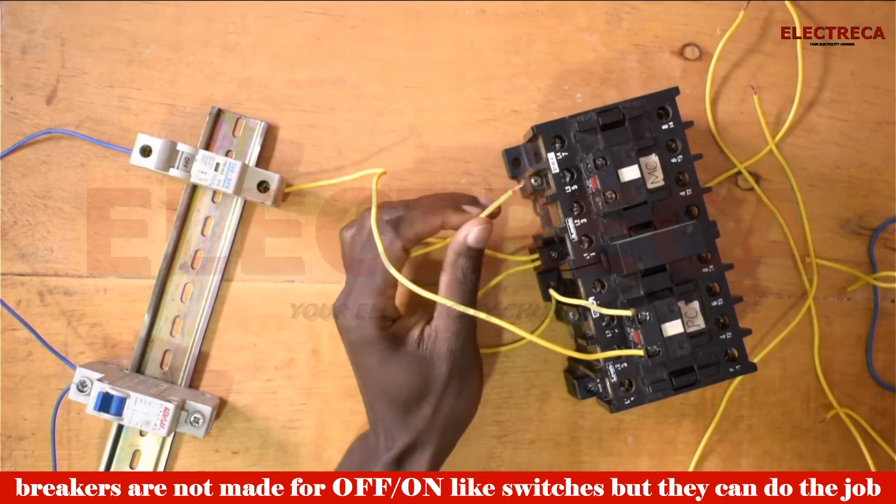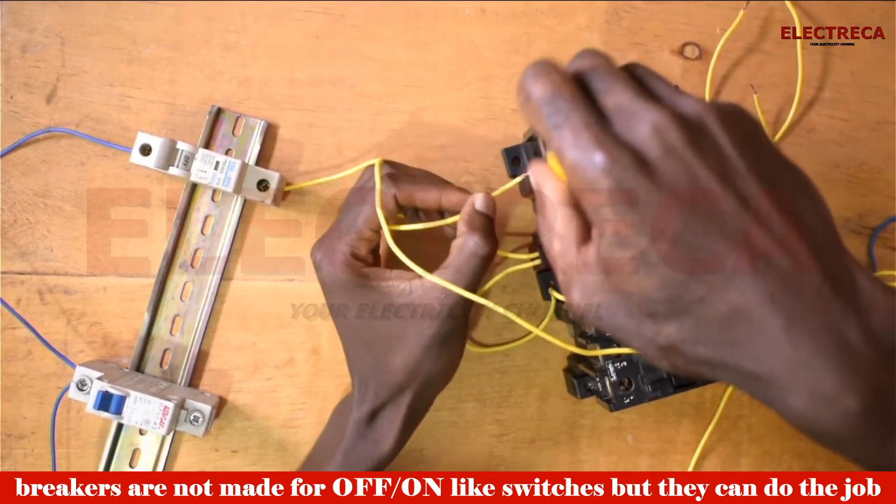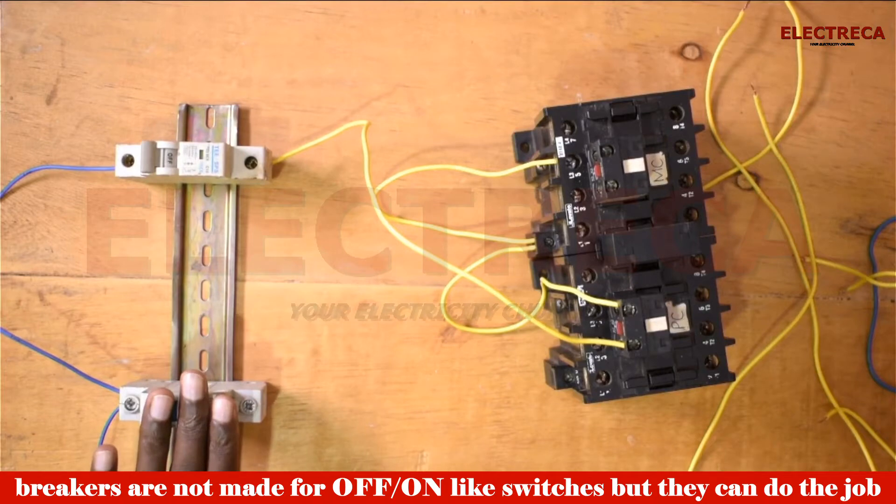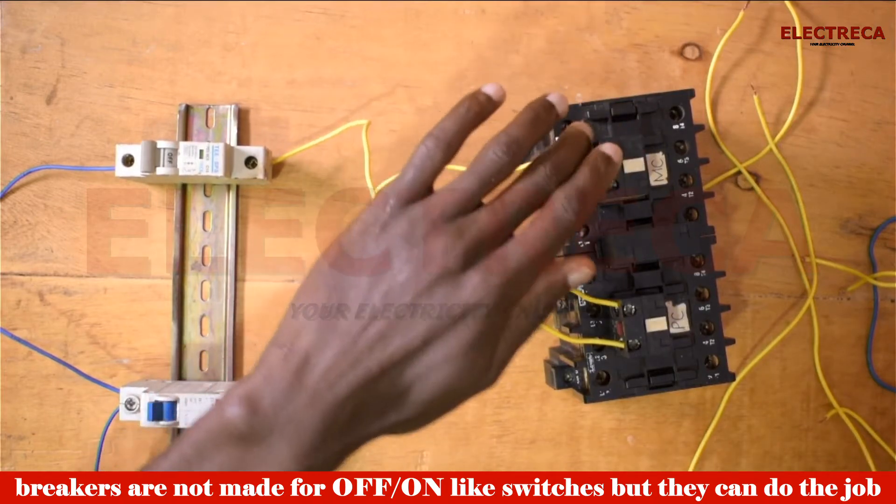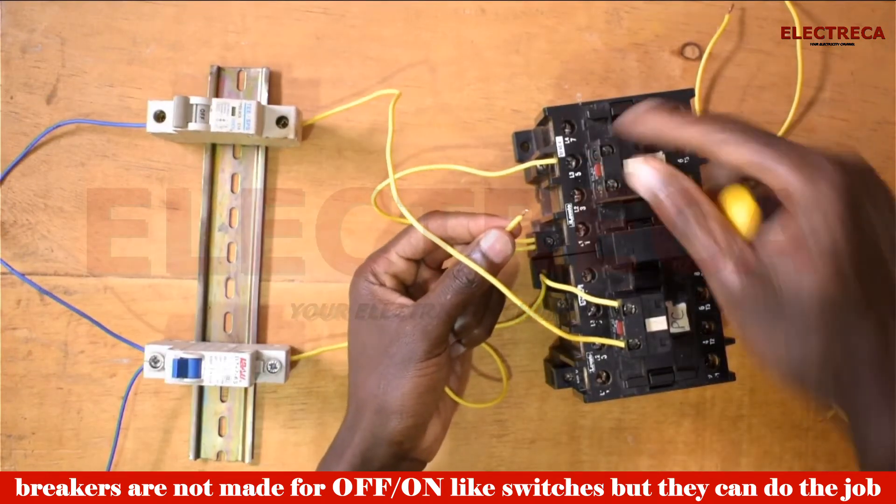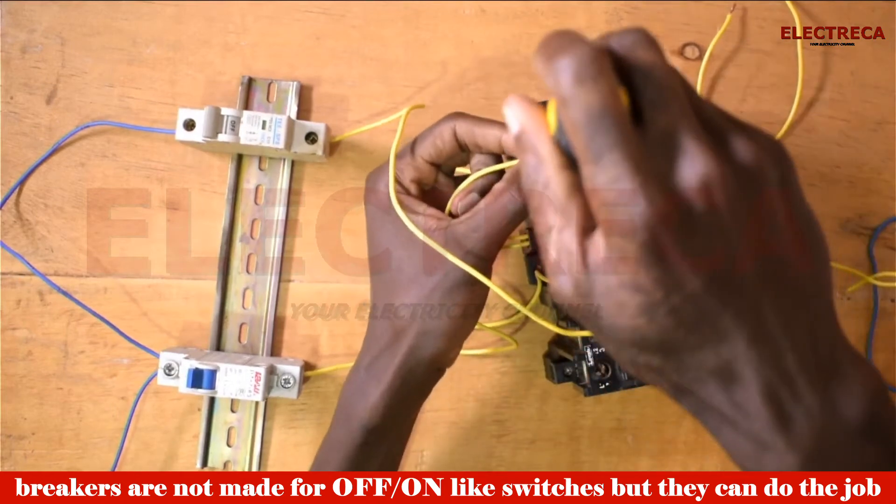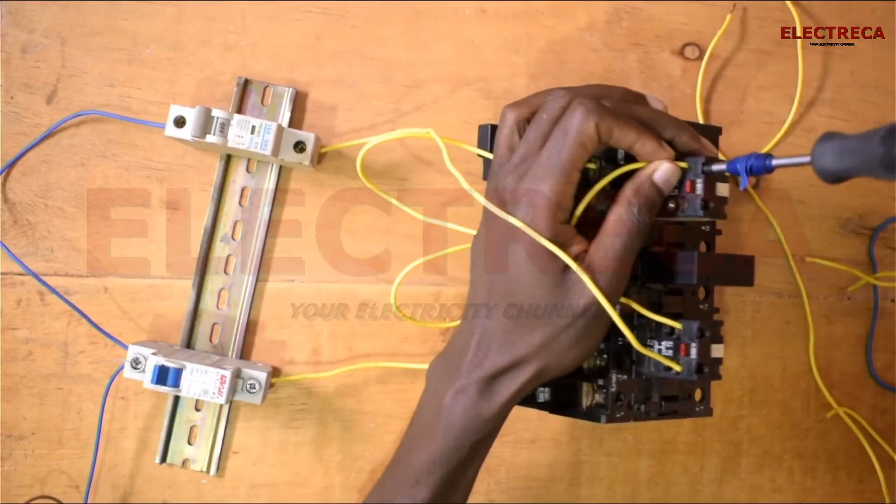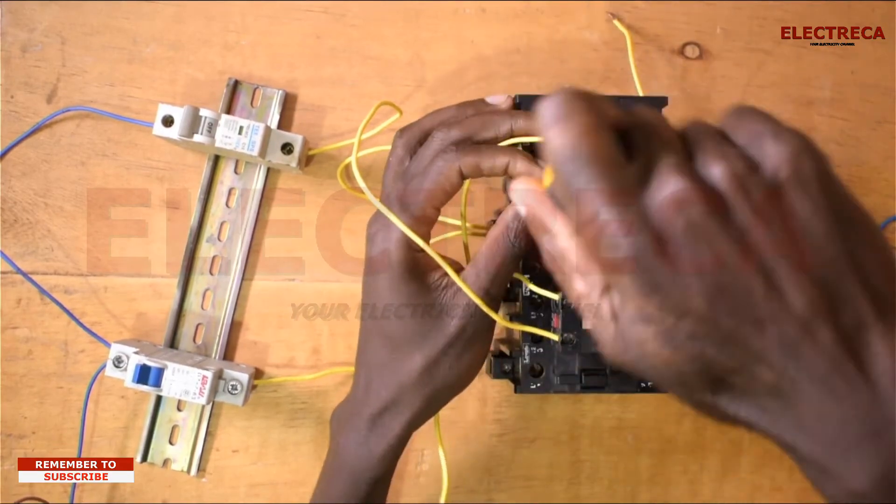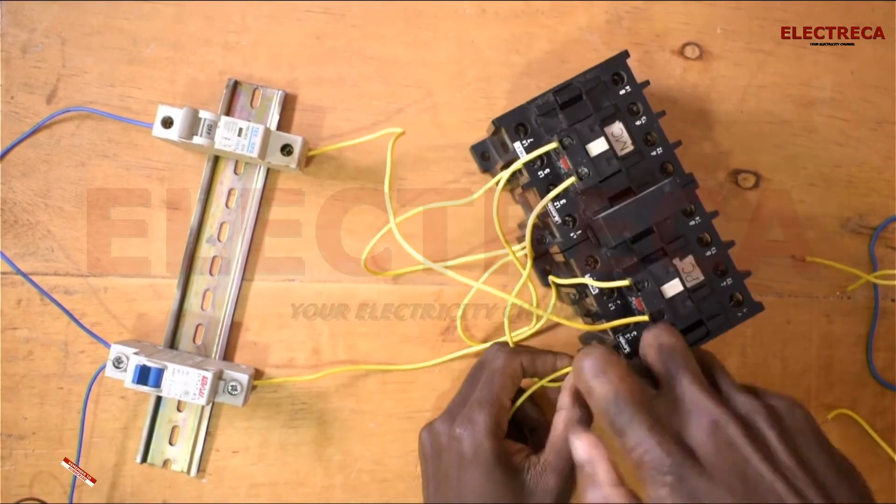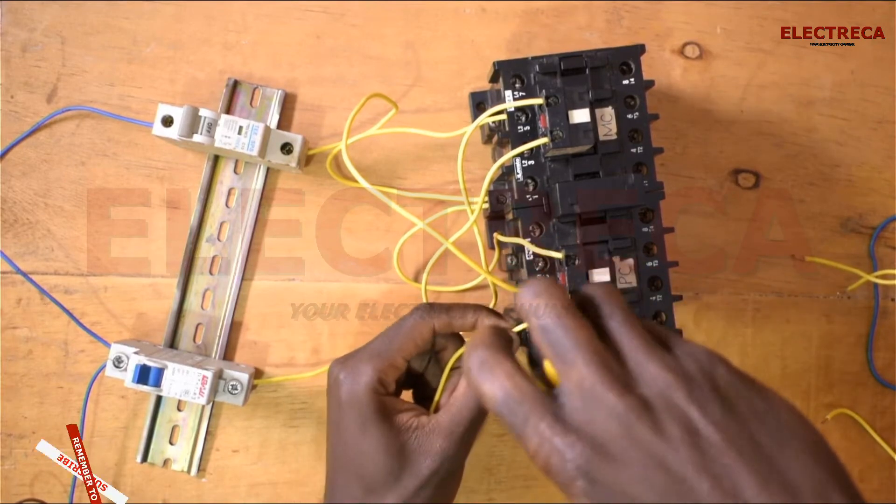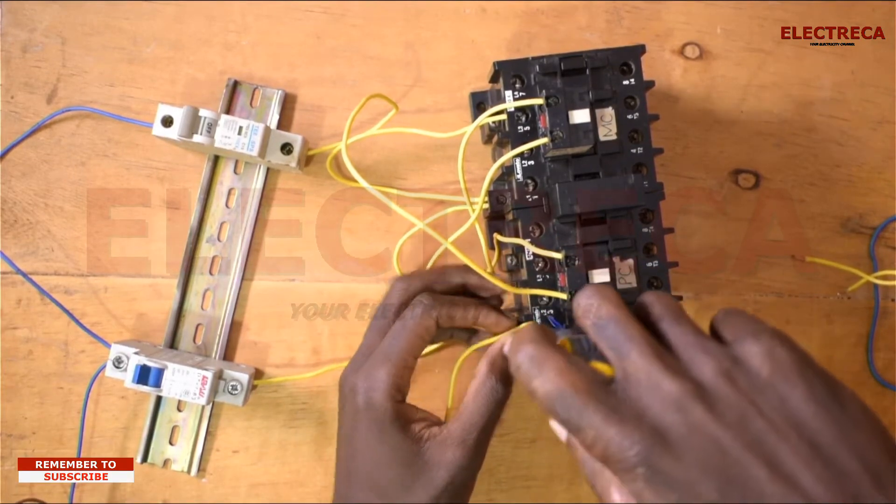And we will have to supply one of the contacts for our light. Same thing with the generator control breaker. It also goes through the normally closed of the main contactor. This will now go to the coil, and this one to supply our light that we want to connect.